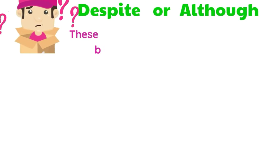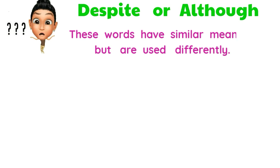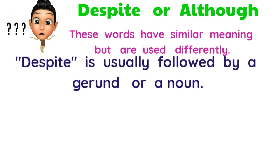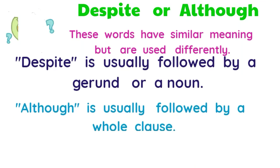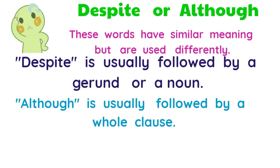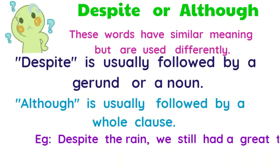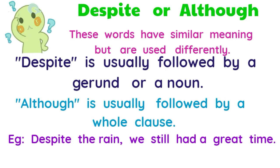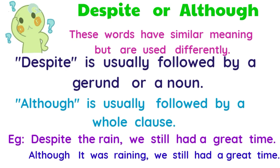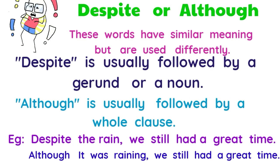Despite or Although. These words have similar meaning but are used differently. Despite is usually followed by a gerund or a noun. Although is usually followed by a whole clause. Example: Despite the rain, we still had a great time. Although it was raining, we still had a great time.